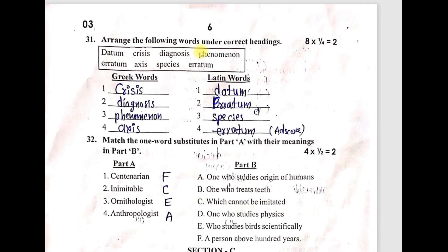Question 31 — arrange the following words under correct headings: Greek words and Latin words. Eight words are given in a box to split into two categories. Greek words: crisis, diagnosis, phenomenon, axis — four words are Greek. The remaining four are Latin words: datum, erratum, species, and erratum — note erratum appears twice so use the reference. Latin words generally form plurals differently.